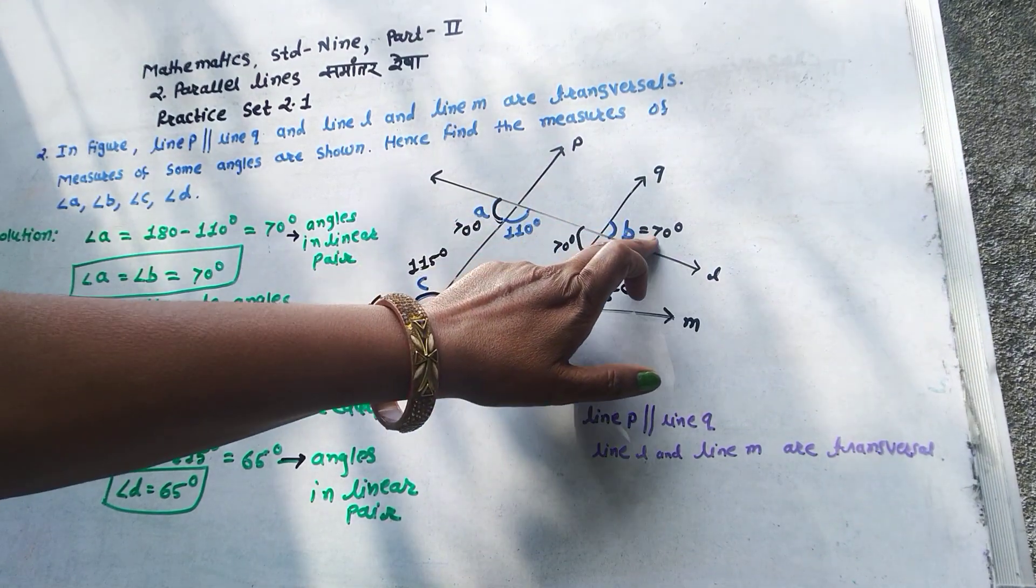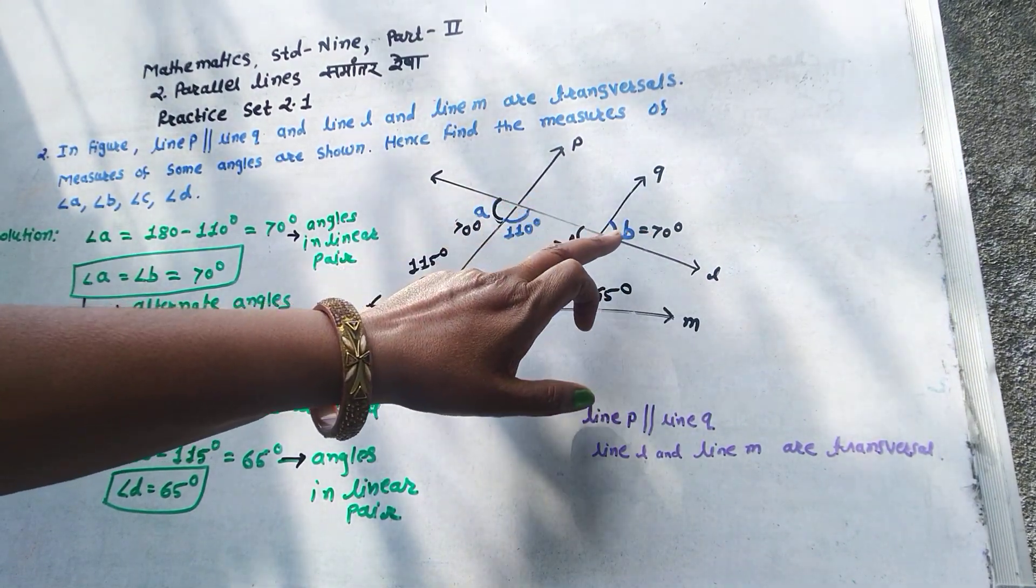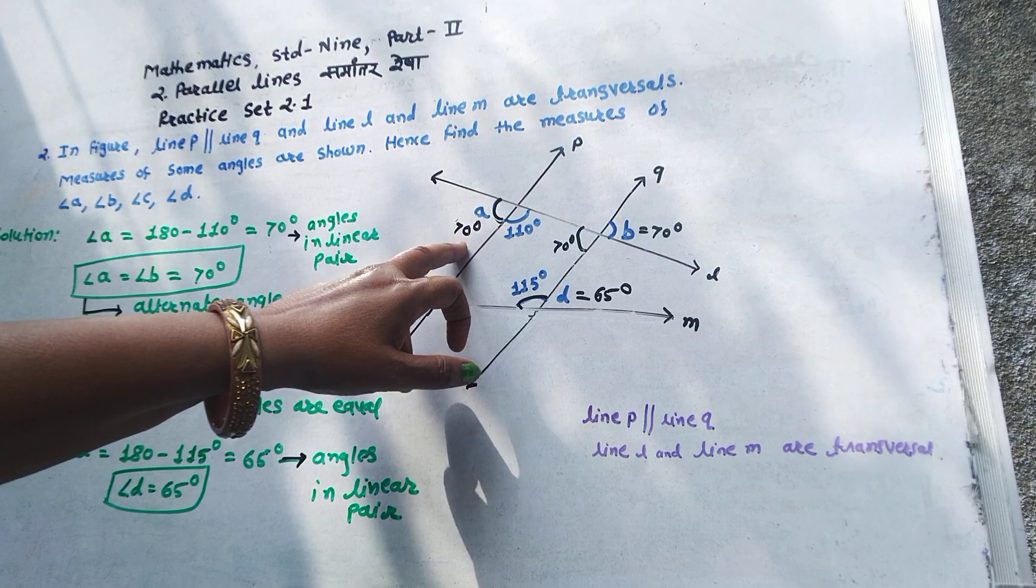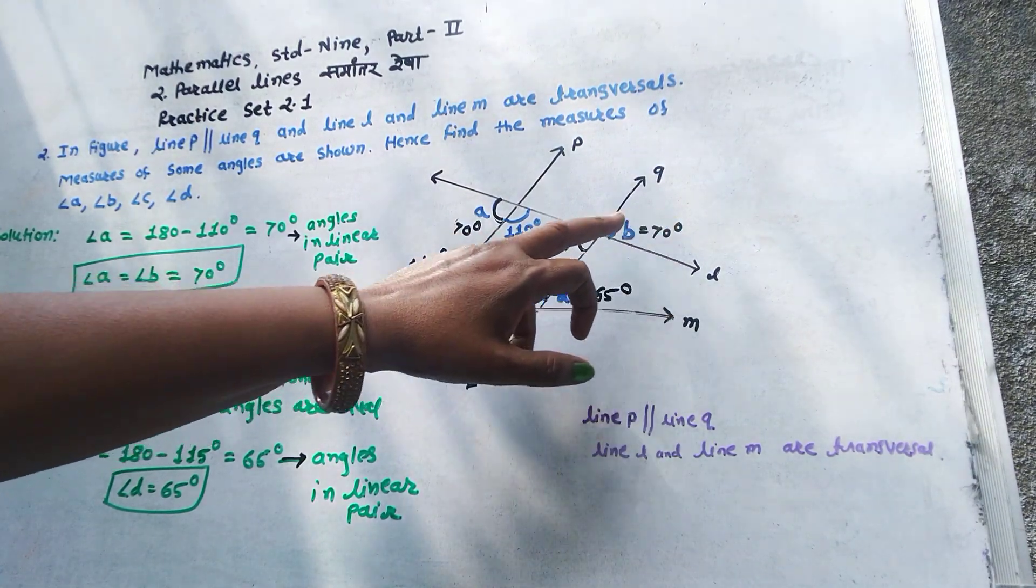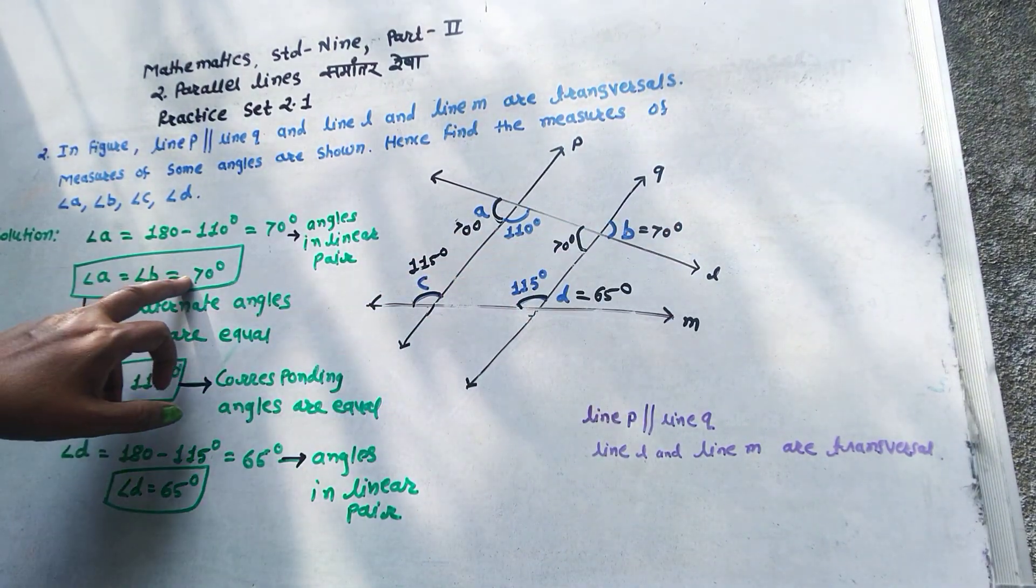Now, angle A and angle B, these two angles are alternate angles, exterior alternate angles and these are congruent or equal. Therefore, angle B is also 70 degrees.